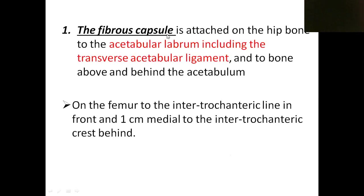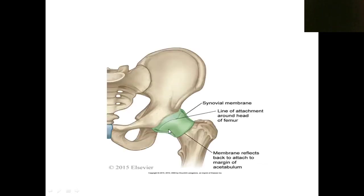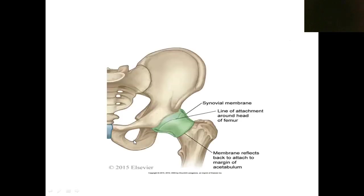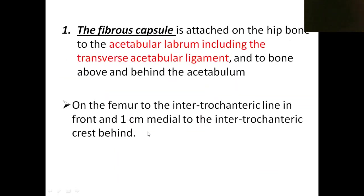The fibrous capsule encircles or covers the entire joint like a fibrous sheet. It has one medial attachment on the hip bone and one lateral attachment on the femur. On the hip bone it is attached to the acetabular labrum, including the transverse acetabular ligament. The acetabular labrum is a fibrocartilaginous structure attached around the margin of the acetabulum to deepen the fossa.